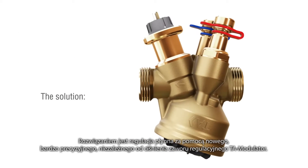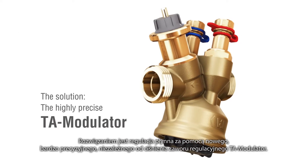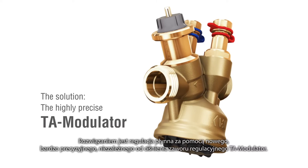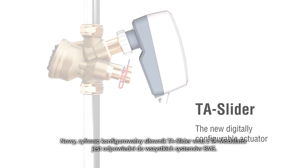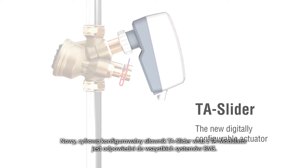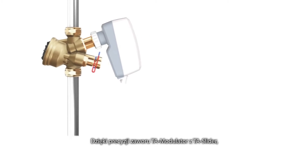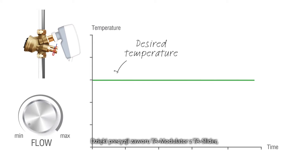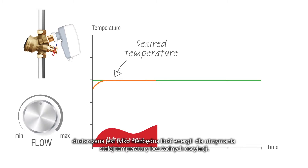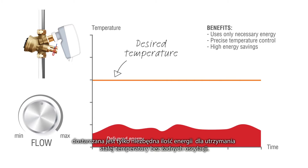The solution is modulating control with the new highly precise pressure-independent control valve TA Modulator. The new digitally configurable actuator TA Slider connects TA Modulator to all building automation systems. Due to the superior accuracy of TA Modulator with TA Slider, only the necessary amount of energy is delivered to keep the temperature constant without any oscillations.